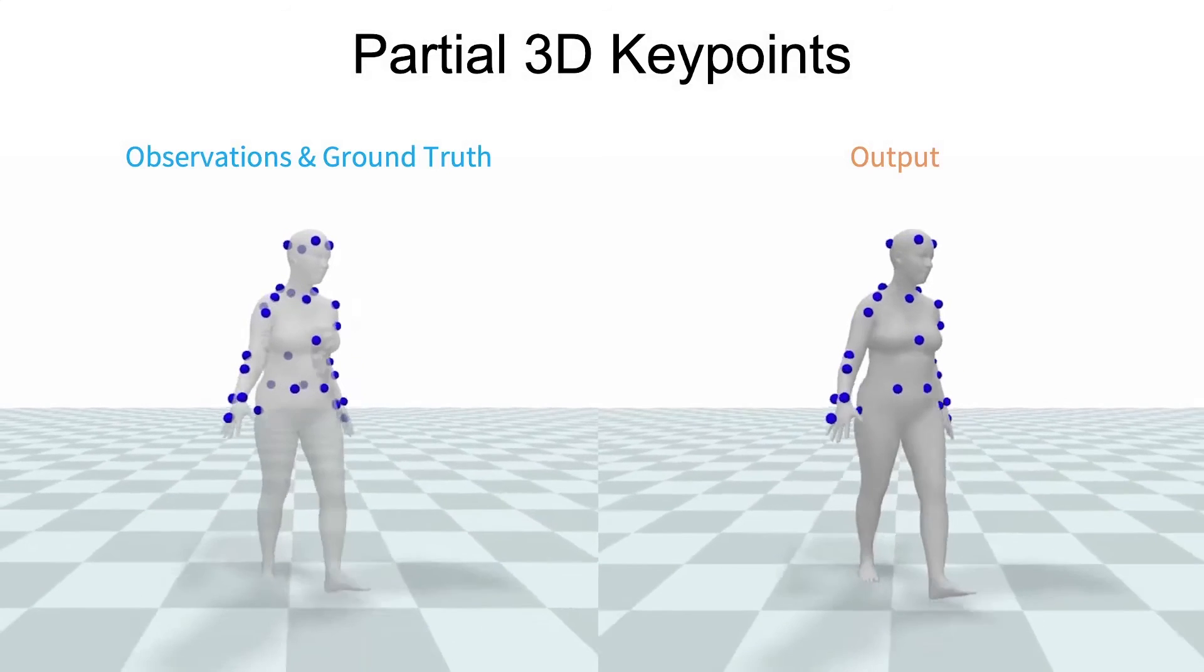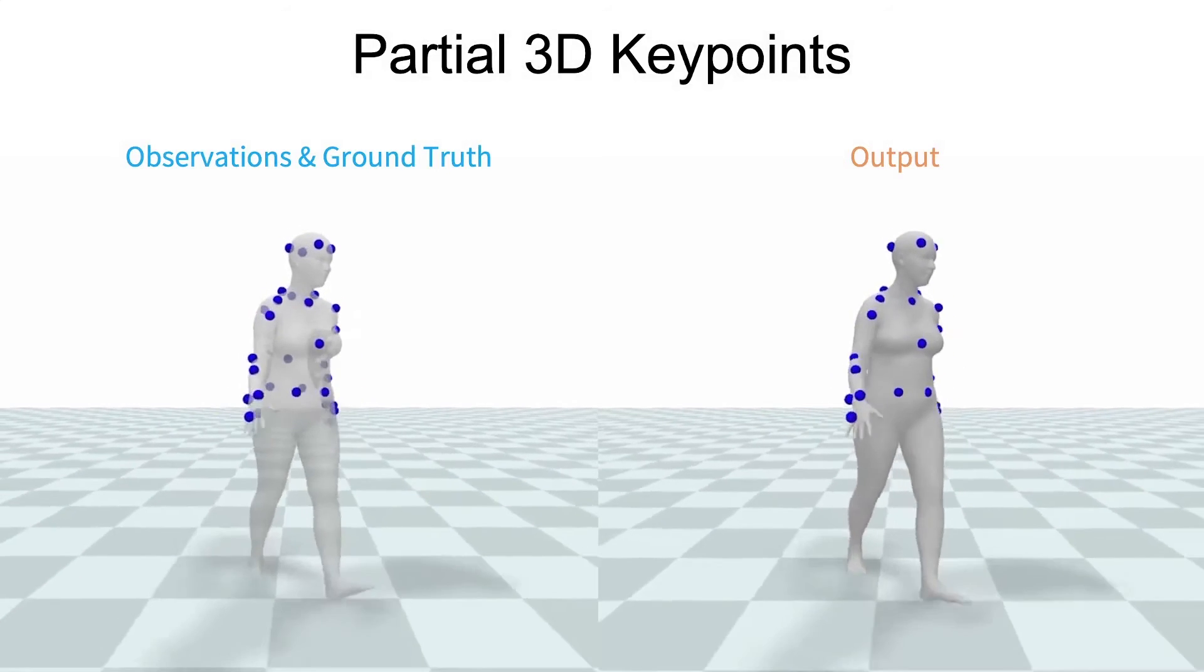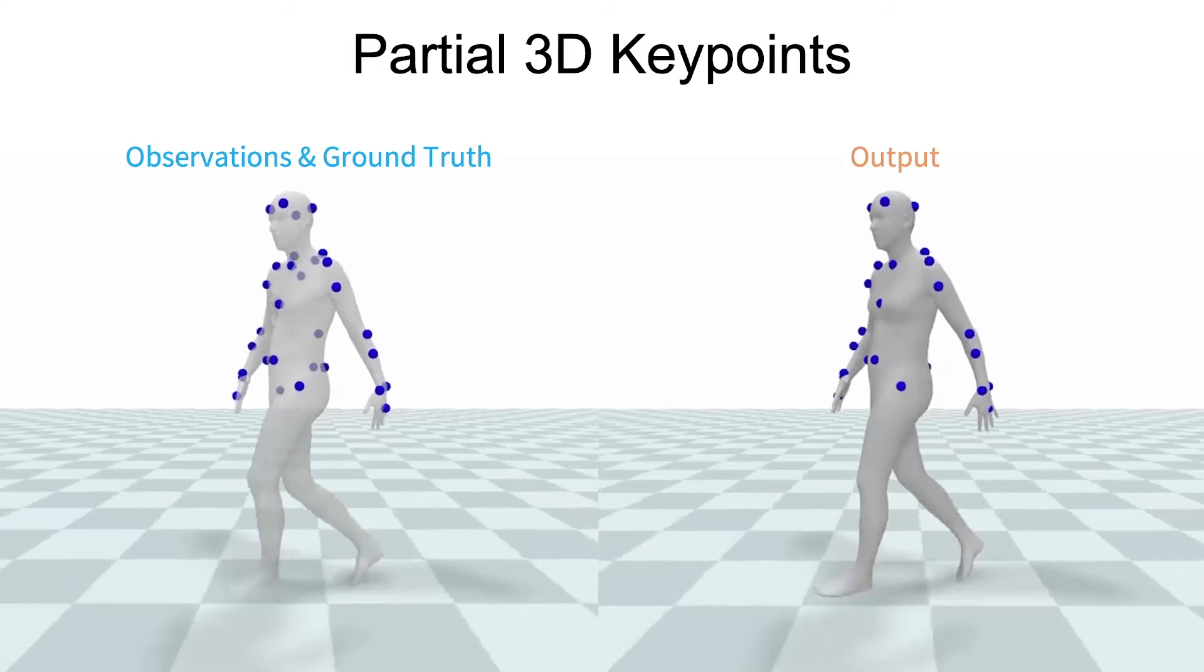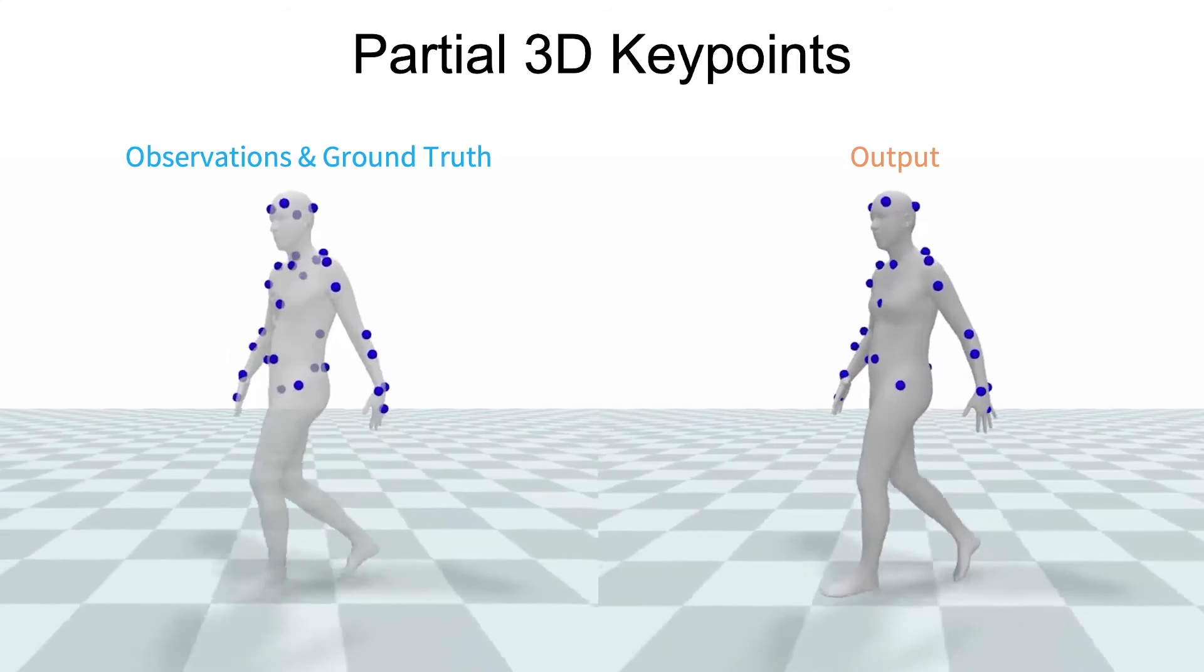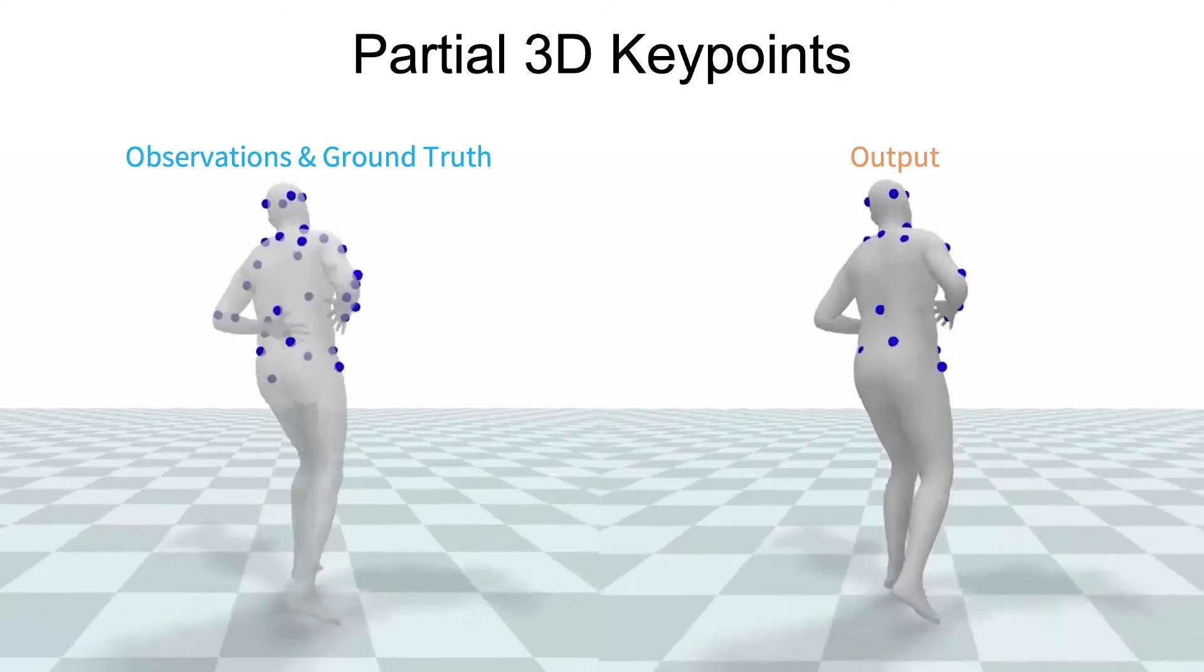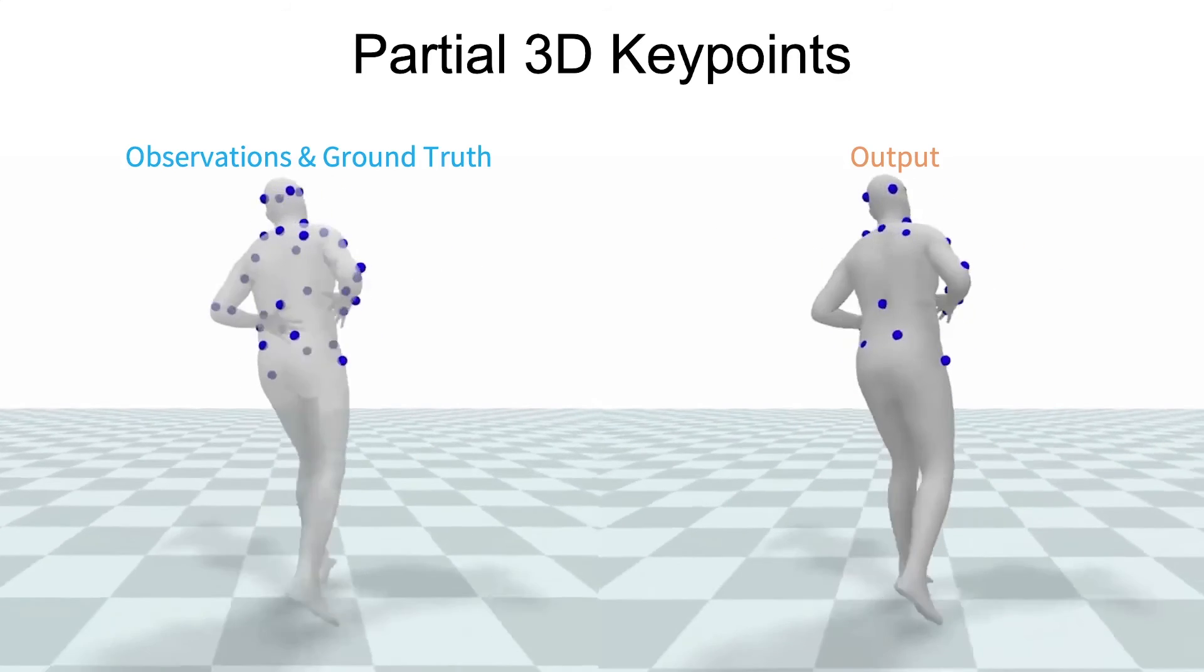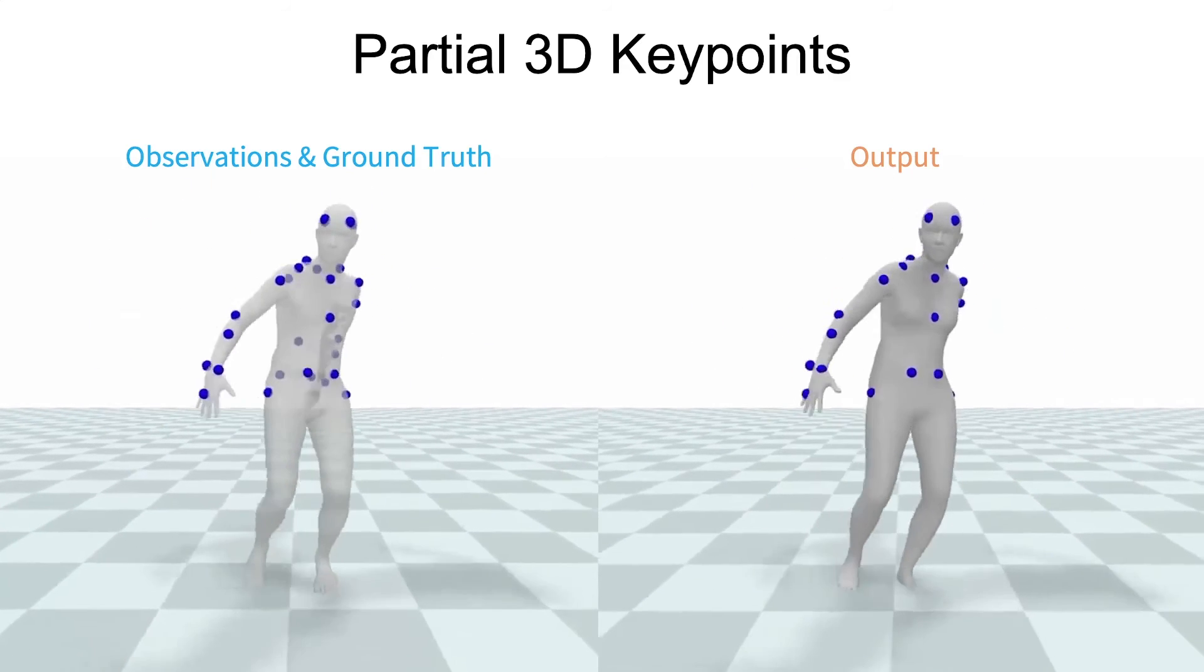In these examples, partial upper body keypoints with known correspondences are given as input to the method. Since the lower body is not observed through the input points, the plausible leg motion prevalent in the output is a result of using Humor as a motion prior. Specifically, the model has learned that various upper body motion correlates with certain stepping patterns.